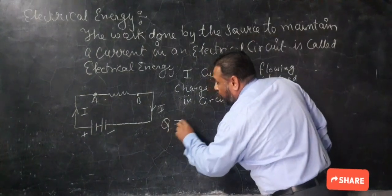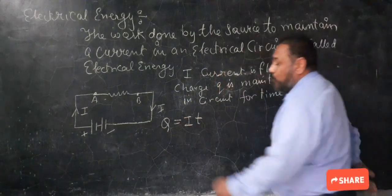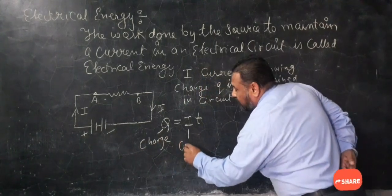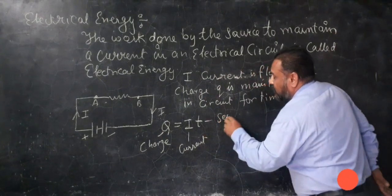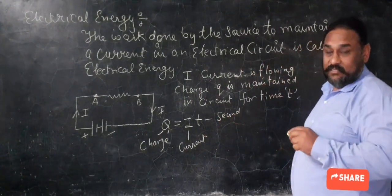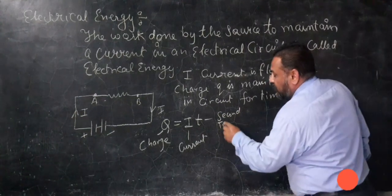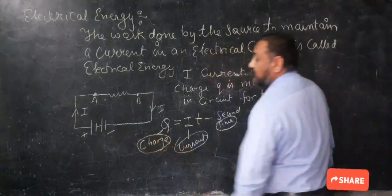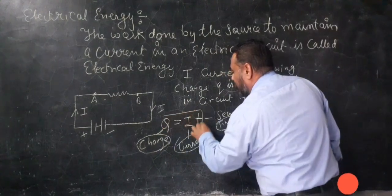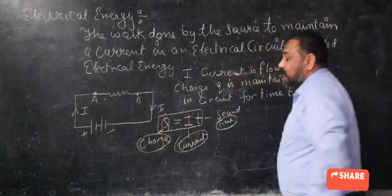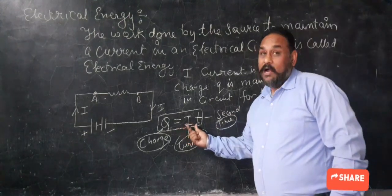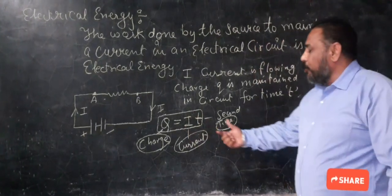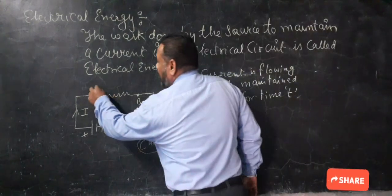So we have the expression Q equal to I T, where Q stands for charge, I stands for current, and T stands for time in seconds. This is our electrical charge formula: Q equal to I T.